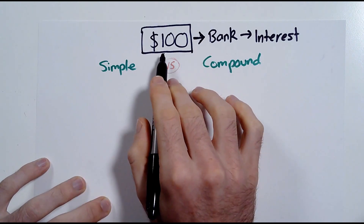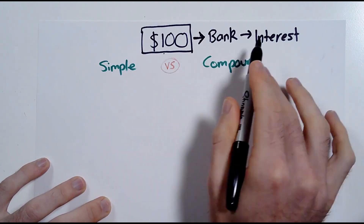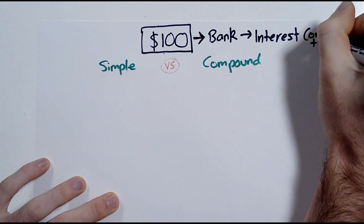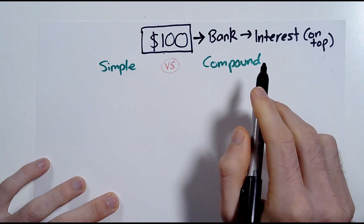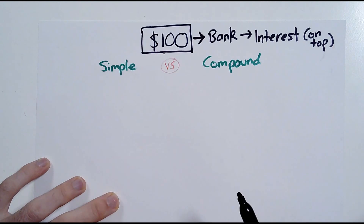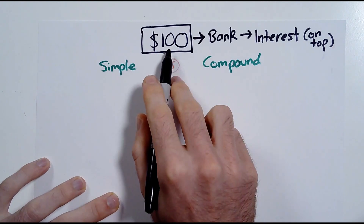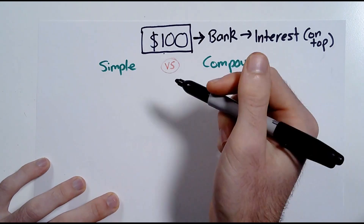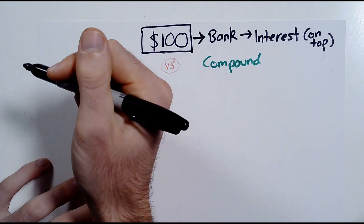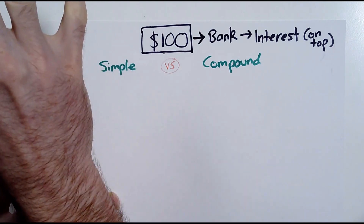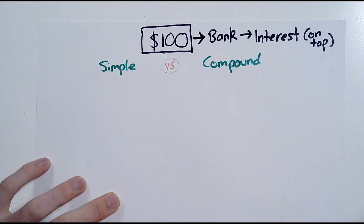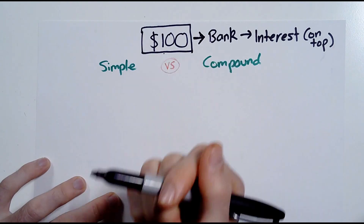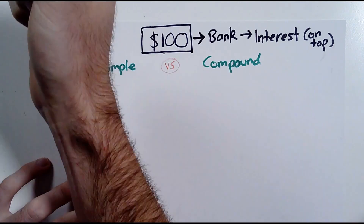But to simplify it down, I'm going to use this basic example of me saving $100 into a bank account and earning interest, which is money that I'm earning on top of the $100. So when I go back to the bank to collect my money, because they were basically storing my money for me, I'm not only going to receive $100 — I'm going to receive a little more because the bank will reward me for entrusting my money with them.